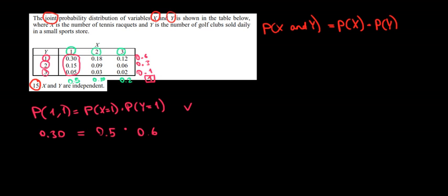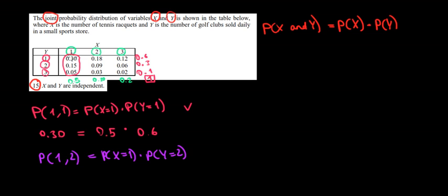We do the same for the next relationship: the probability that x equals 1 and y equals 2. That should equal the probability of x being 1 times the probability of y being 2. The probability that x equals 1 is 0.5, times the probability that y equals 2 is 0.3. If we multiply the two, we get 0.15 — and that's exactly what we have in that cell. So that relationship is checked as well.